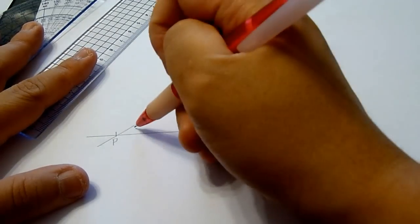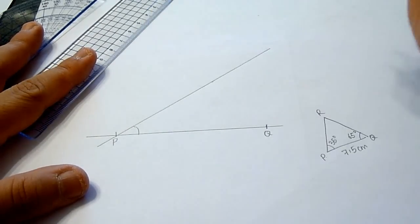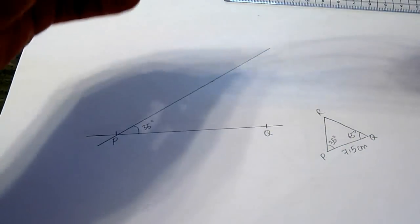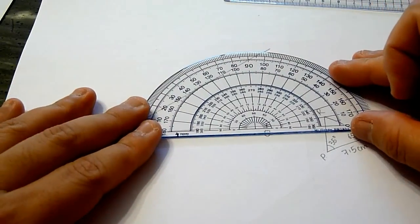This is angle RPQ, which is 35 degrees, and angle PQR is 65 degrees.